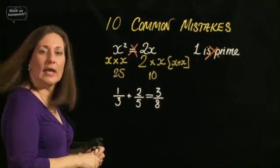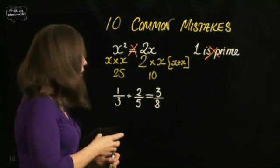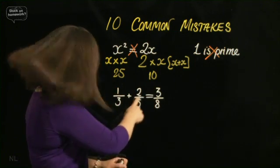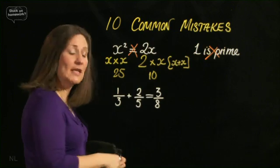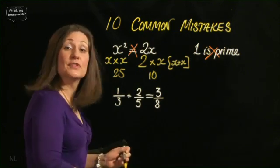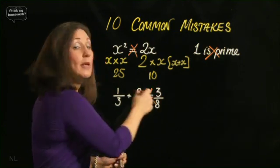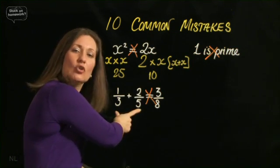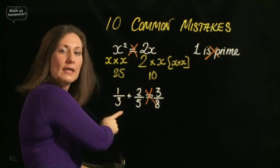And the last one. What have you got here? Can you see the mistake? Well, what's happened is we've added 1 and 2 to get 3. And 3 and 5 to get 8. So that is absolutely not right. Because we know if we add fractions, they have to have the same denominator.